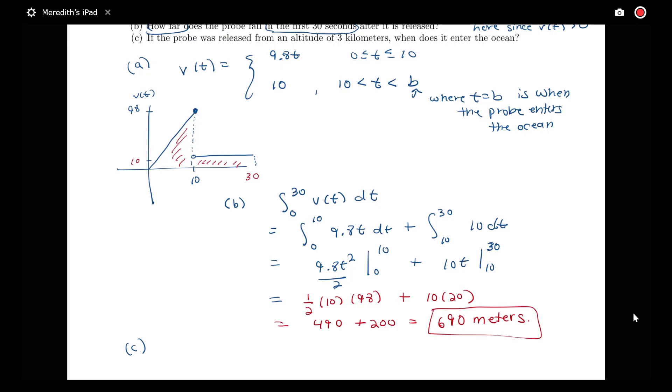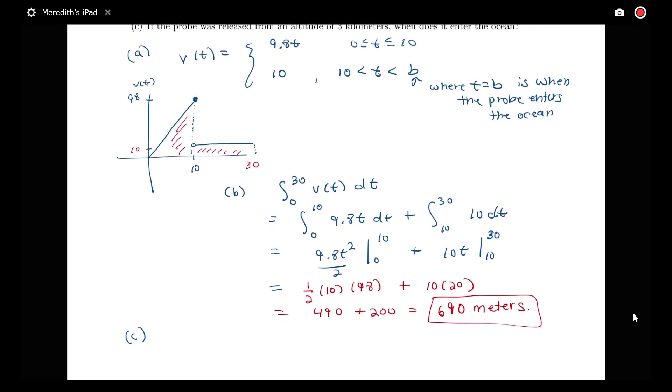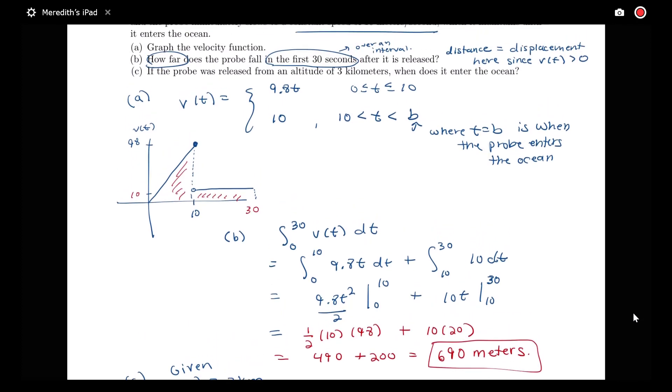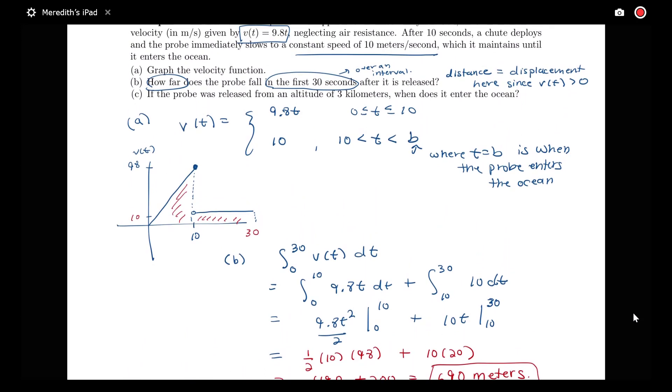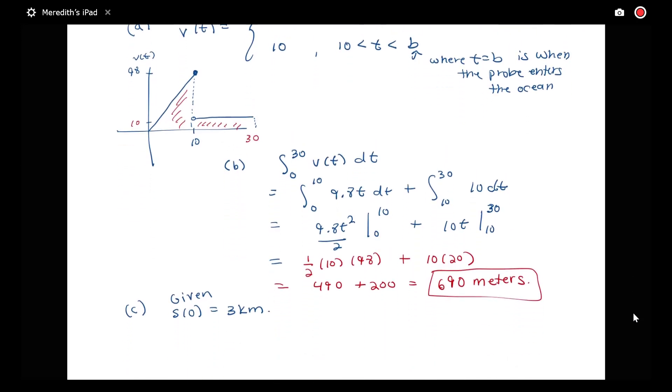So this part C is just a little different kind of question than we've been asked before. We're given some initial value information, but we're asked to find a time instead of to find position information. So we're told the probe was released from this altitude of 3 kilometers. So we know that S(0) here is equal to 3 kilometers. Notice that everything else in this problem is in terms of meters, so we're going to need to convert that 3 kilometers in terms of meters.